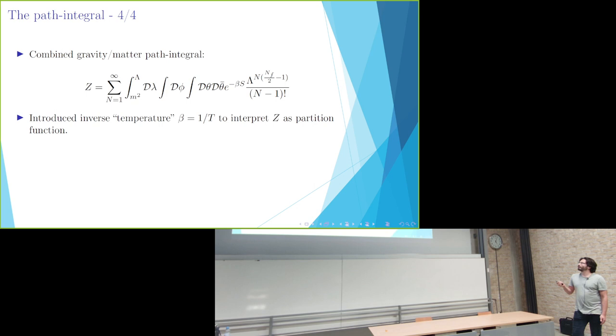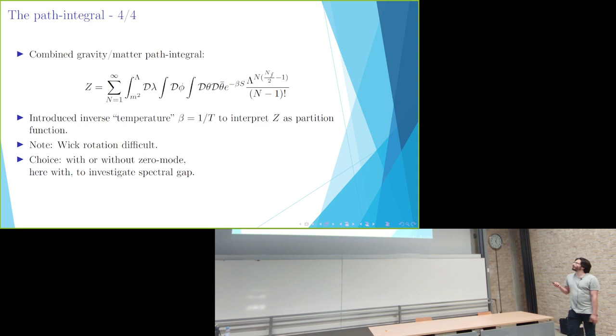We started exploring this in Euclidean signature. So we have introduced an inverse temperature to interpret this path integral as a partition function. Of course, this means that we don't really know how to Wick rotate this, but we started with this anyway. Here you can have some choices for what space of spectra you want to integrate over. We decided to, for example, assume a zero mode so that we can actually investigate the spectral gap above this zero mode. And it's interesting to note here that this is just a finite integral and partition function.